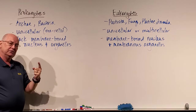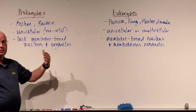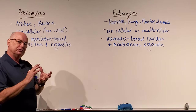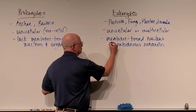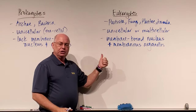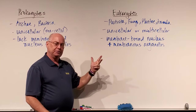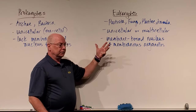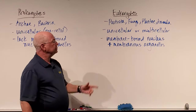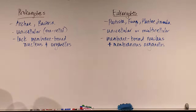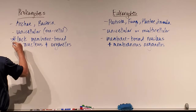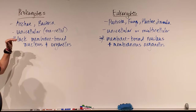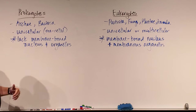Prokaryotes don't lack organelles entirely — they do have ribosomes, but not the same ribosomes as eukaryotes. Ribosomes don't have any membrane around them. When I'm talking about membranous organelles, I'm talking about things like the Golgi apparatus, the endoplasmic reticulum — both smooth and rough — and mitochondria. In plants, we can also have chloroplasts. The ribosomes in prokaryotes are 70S ribosomes. The S stands for a Svedberg unit, used to measure the sedimentation rate. Eukaryotes have 80S ribosomes — a higher Svedberg unit rating.